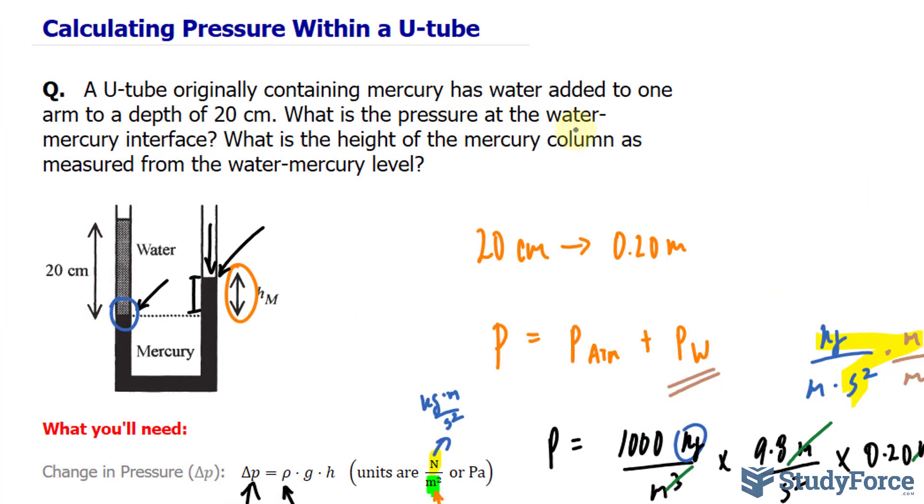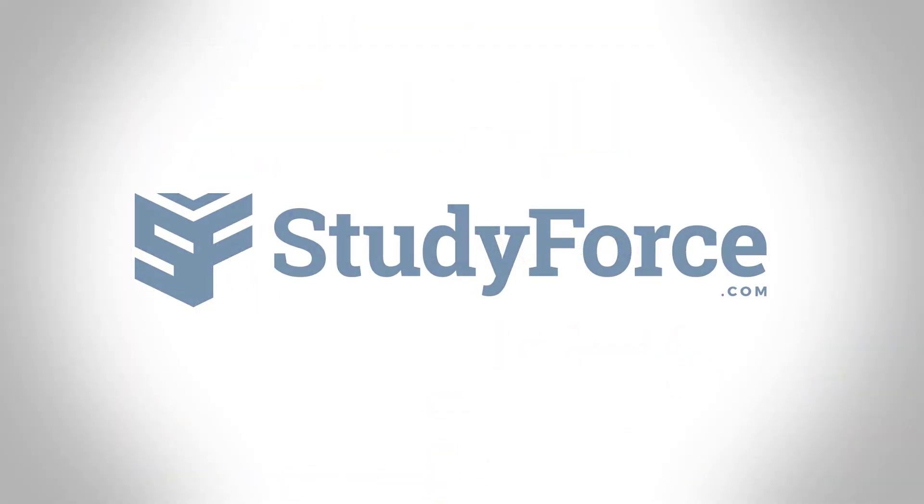So we found the pressure at the water-Mercury interface, and we found the height of the Mercury column as measured from the water-Mercury level over here.